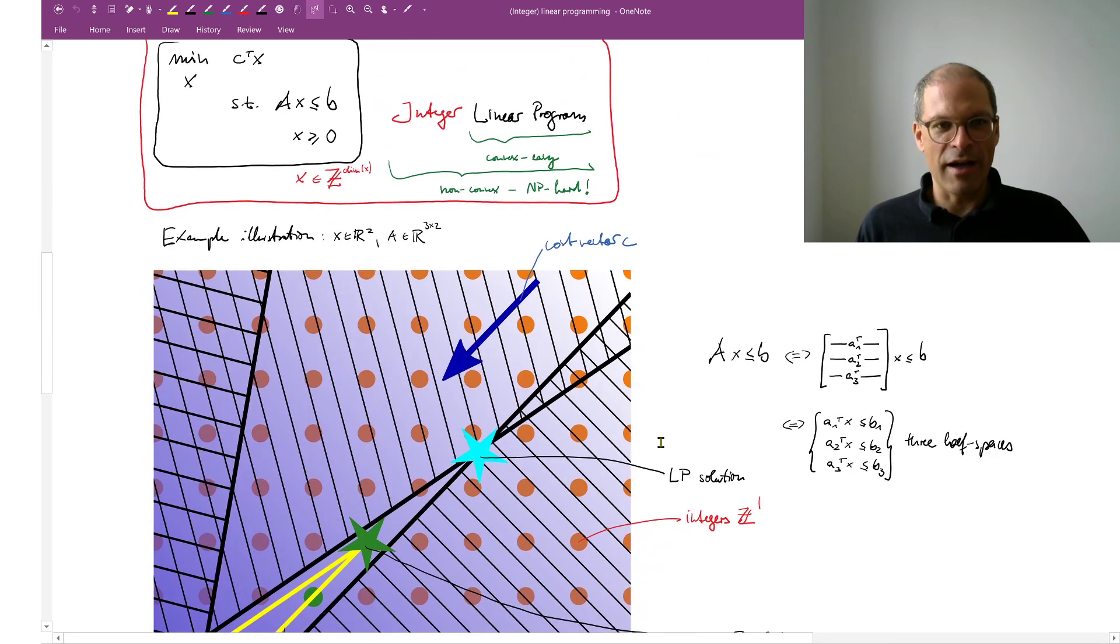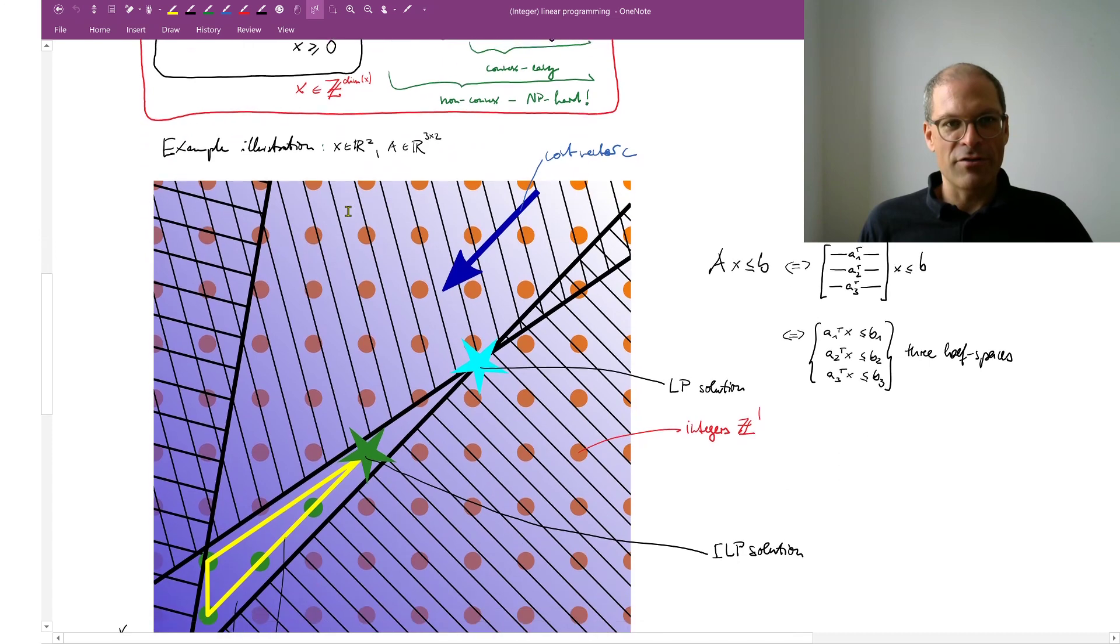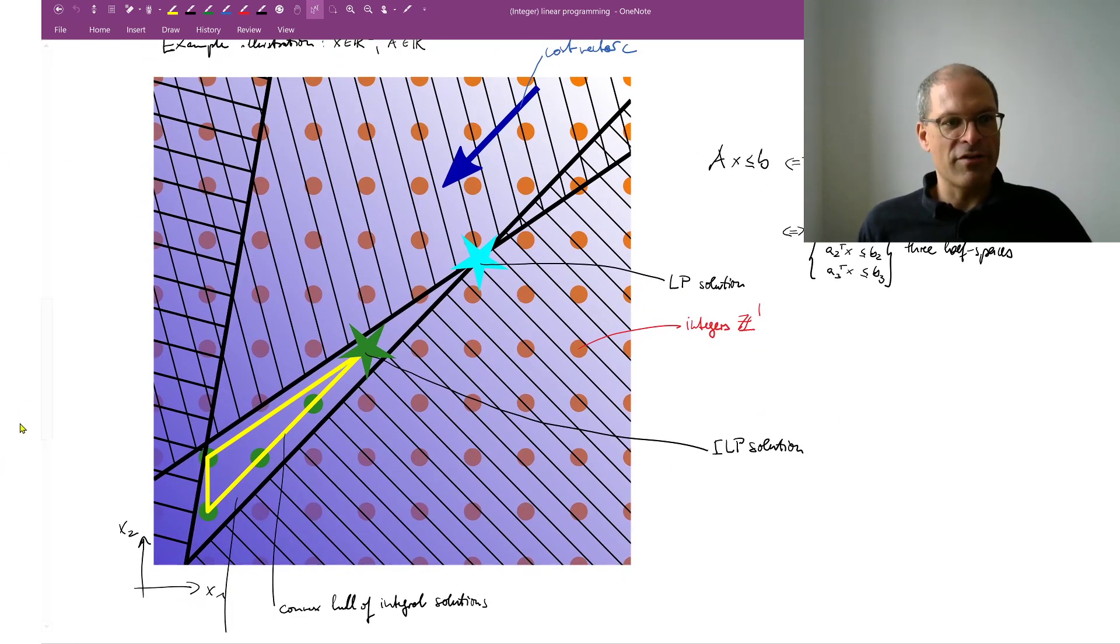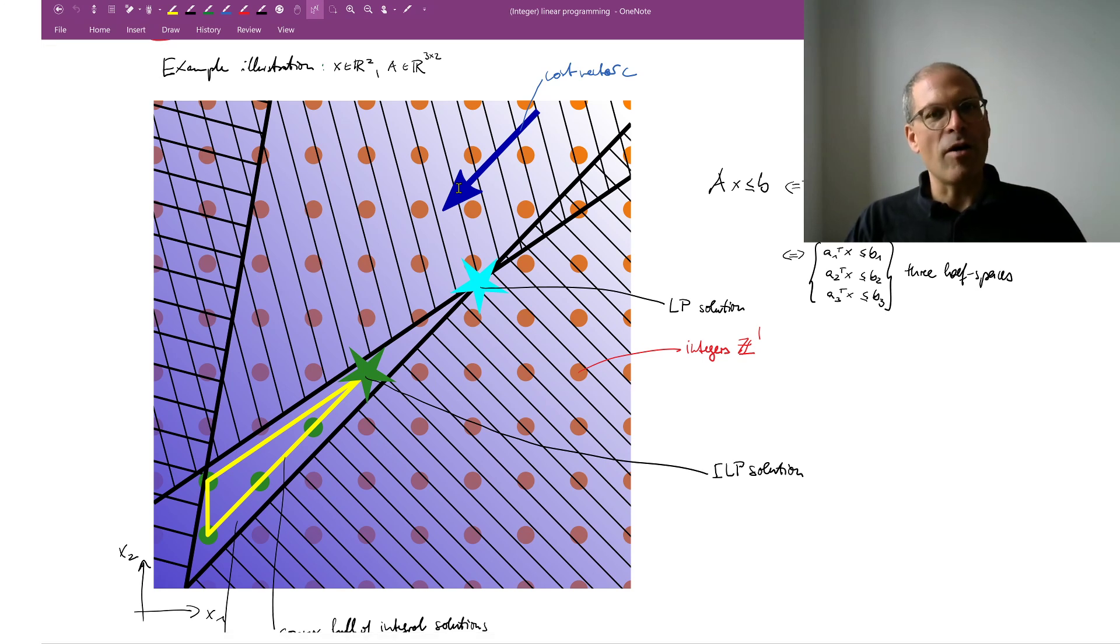So I have here an example illustration where, we said linear programming, the objective is linear, the constraints are linear, and in integer linear programs in addition I have this integrality requirement. x here is a vector, c is a cost vector, and this is a vector and matrix describing my constraints. Here I have an example illustration. I have a two-dimensional space to optimize over, so here are my coordinate axes x1, x2. Now we have this cost vector. The cost vector I pretend points in the direction of the blue arrow, and hence if we want to minimize cost we want to walk as far as possible in the opposite direction of the cost vector.